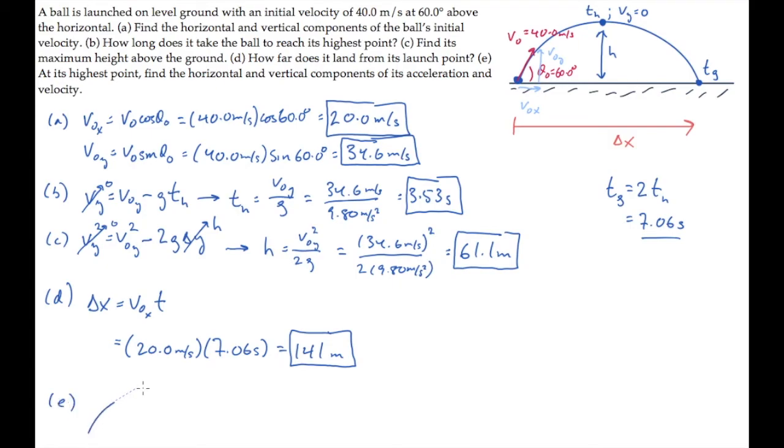In part E, we're asked at the highest point to find the horizontal and vertical components of acceleration and velocity. So, here's the path again with the highest point. At that location, we know that the ball is traveling fully sideways. So, VX, the X component of velocity there, is V naught X. That never changes. It's constant. And VY is 0. The ball is moving neither up nor down at the highest point, only sideways.